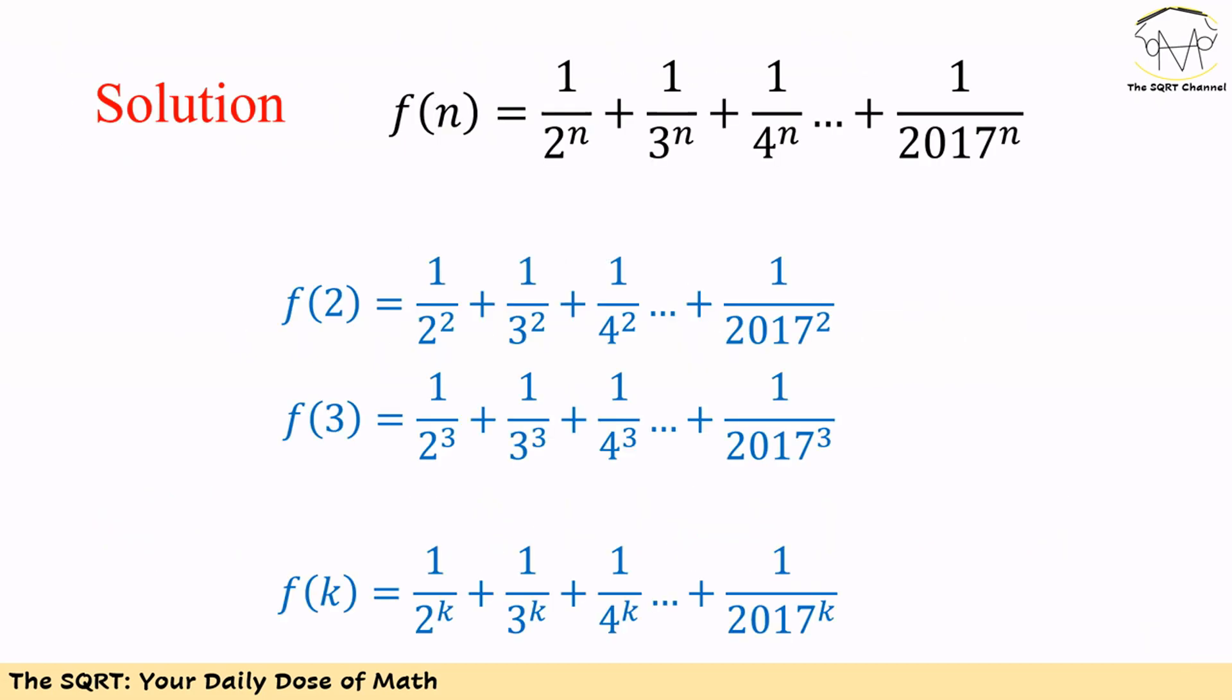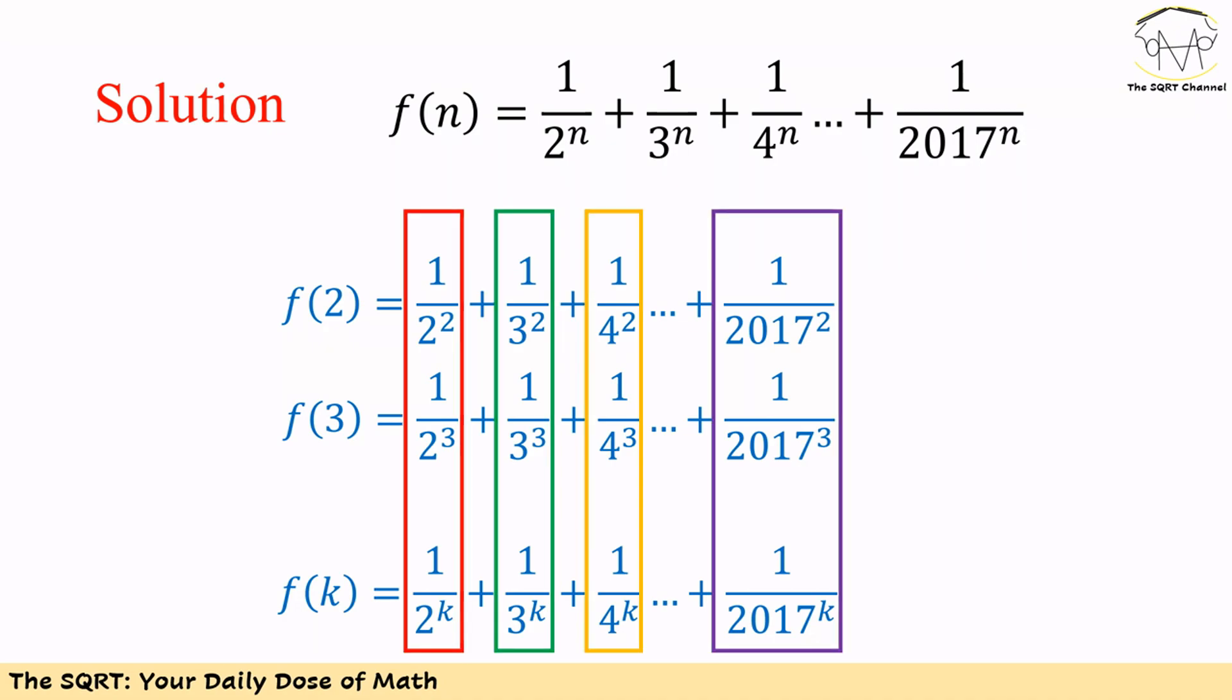To solve this problem, let's start with writing f of 2, f of 3 and in general f of k. f of 2 is equal to 1 over 2 to the power of 2 plus 1 over 3 to the power of 2 and so on so forth.